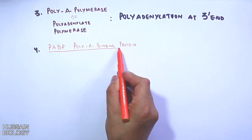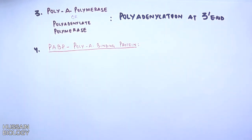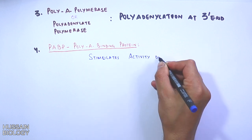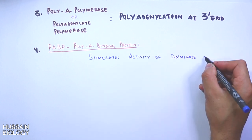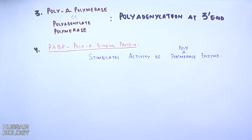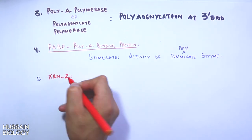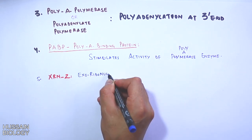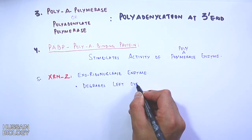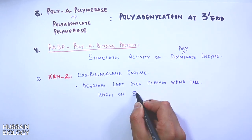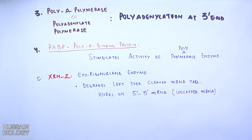Furthermore, we need PABP enzyme — poly A binding protein. This protein stimulates the activity of poly A polymerase enzyme. We also need XRN2, which is the exoribonuclease. It degrades the leftover cleavage mRNA tail and works in the 5' to 3' direction on uncapped mRNA stretches.